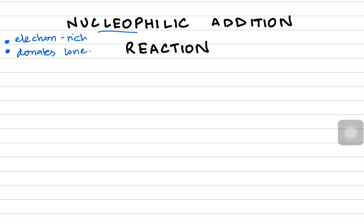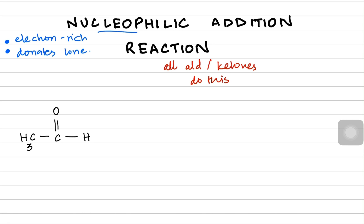Remember, all aldehydes and ketones do this nucleophilic addition reaction. We're going to talk about the mechanism starting with an ethanal molecule. This reaction happens in the presence of potassium cyanide (KCN) and HCN, which is hydrogen cyanide. In this AS and A-level chemistry syllabus they mention hydrogen cyanide, so I'm using that. KCN is here at the beginning — KCN has a positive potassium ion and cyanide has a negative charge.